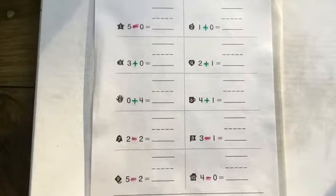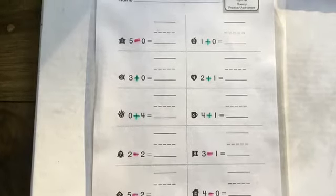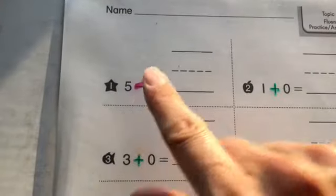This is your practice page, but I've highlighted the plus and minus with red and green. Let's take a closer look. Look at number one together. So this is a minus sign, so we're going to subtract. We're taking away.